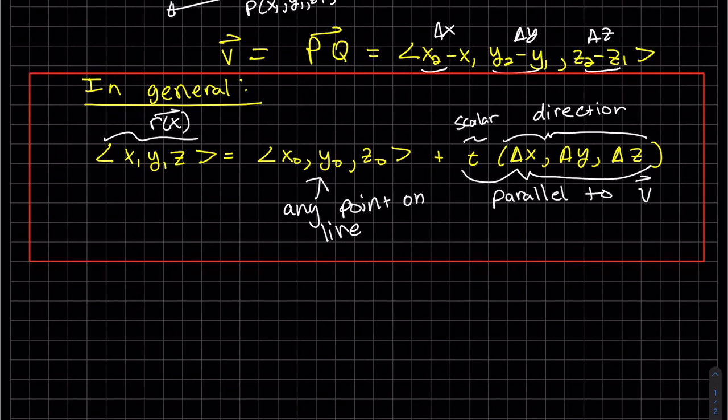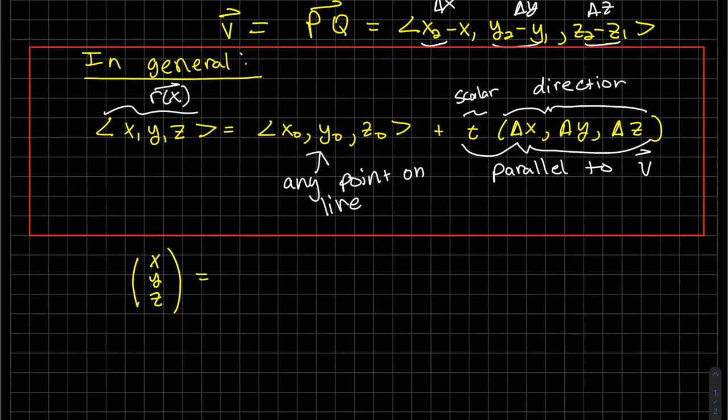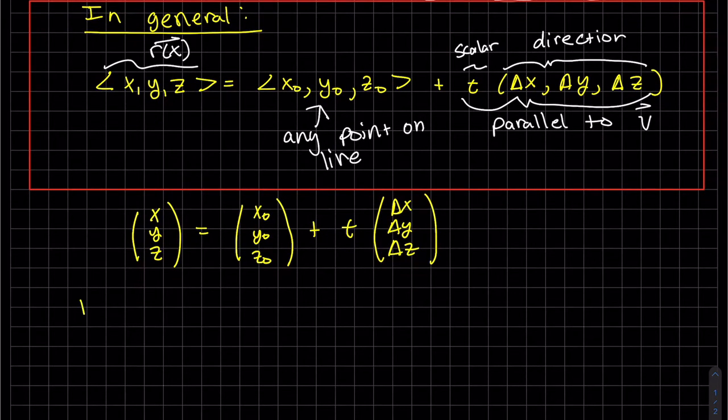So here's some different ways we can write it. We can do it in parametric form. These are the same thing. Here, for parametric form, we would take X is equal to X naught plus T times delta X would be our first equation.